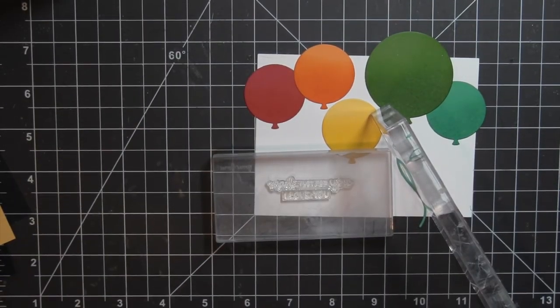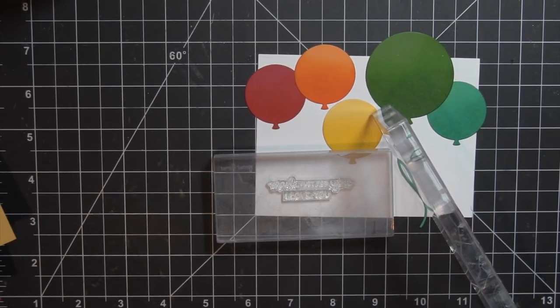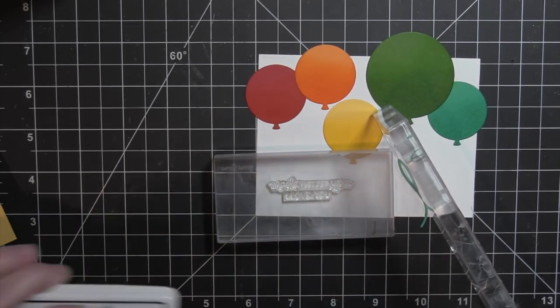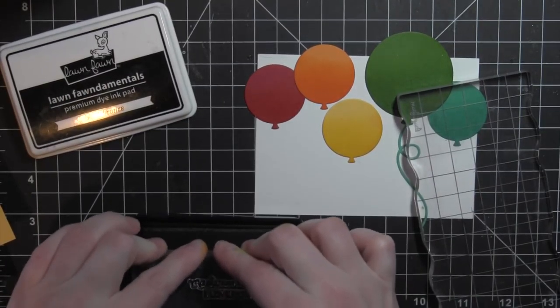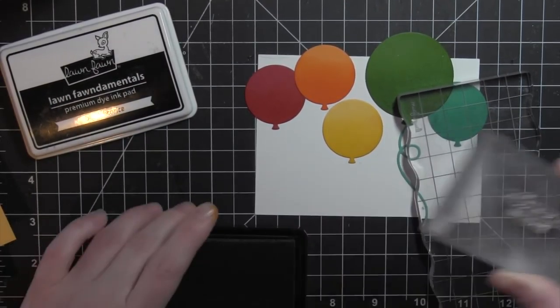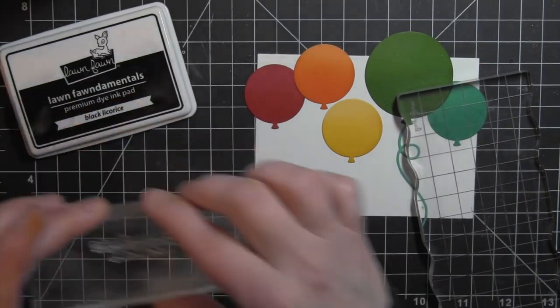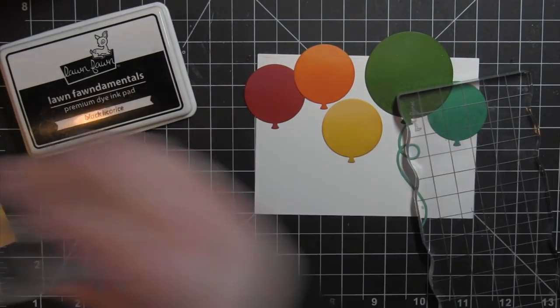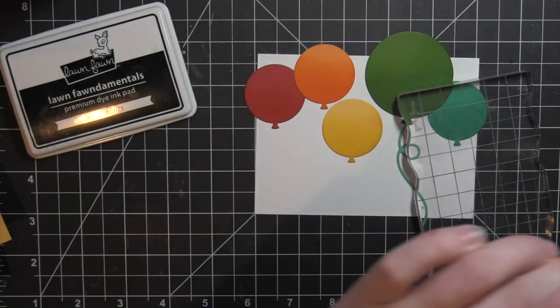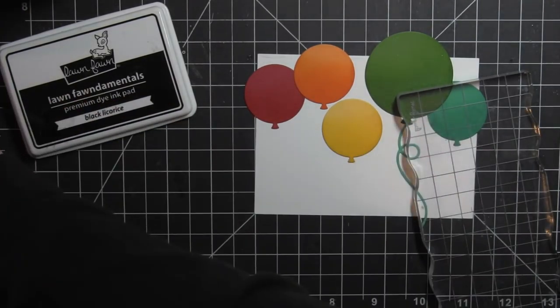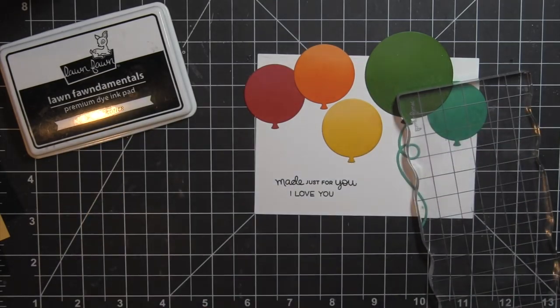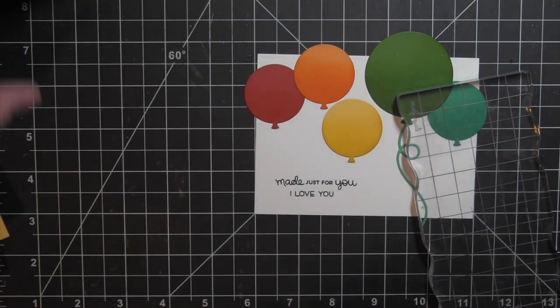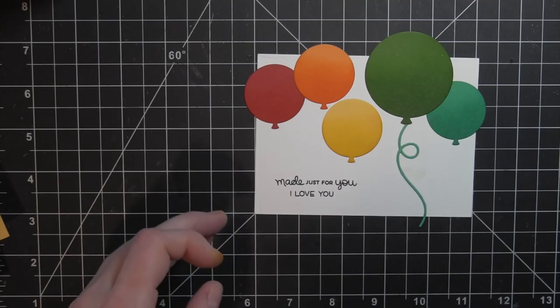I'm going to pick up my greeting with an acrylic block. I'm going to pick both greetings up together and stamp them as one. I'm using the Lawn Fawn Black Licorice Ink. I'm going to stamp that off on a scrap piece of paper just in case. Since I have not inked up either of those greetings before, I want to make sure I get a nice inked impression on my card. And there is my greeting that reads, Made Just For You, I Love You.